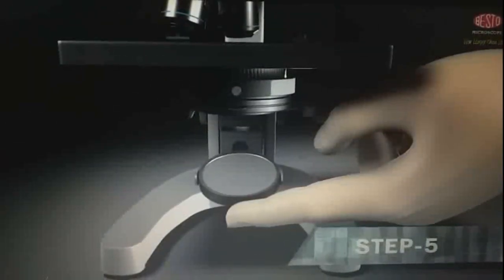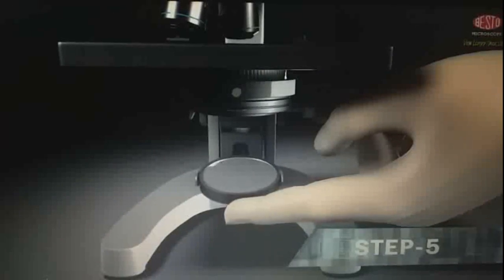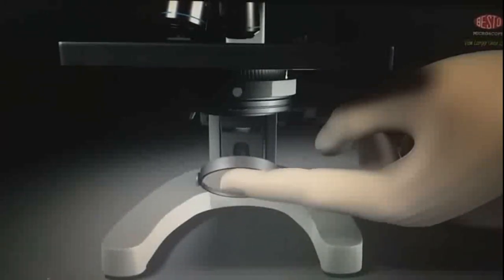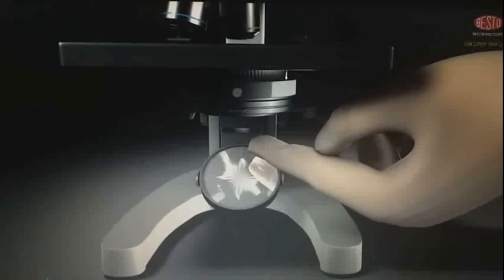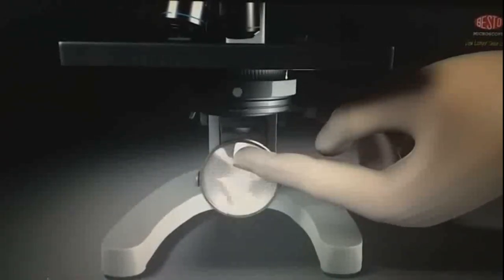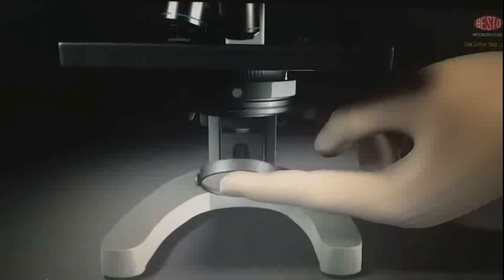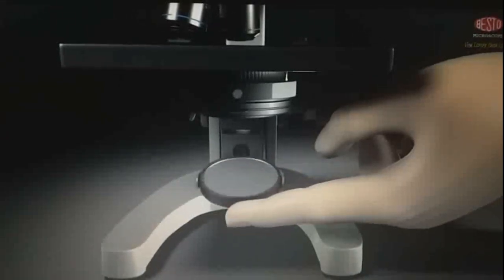Step 5. The reflector has one side flat and other is concave. Flat side will provide sharper image in most of the cases, while the curved side provides a brighter image. You can touch and feel the curved side and the flat side.